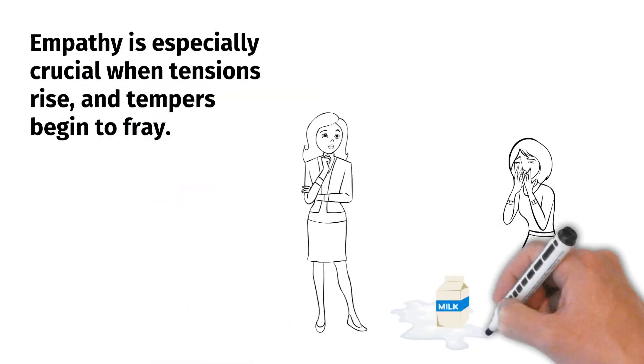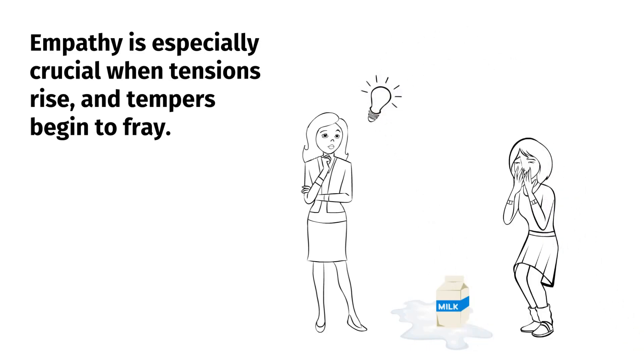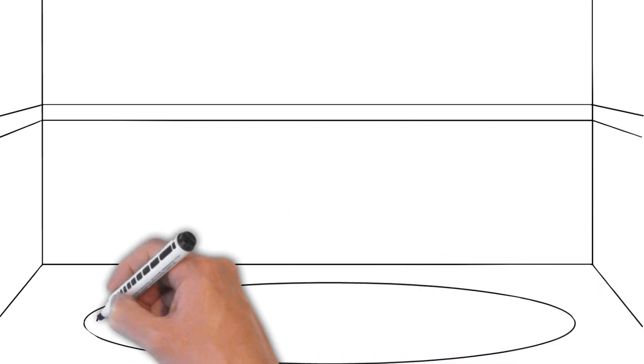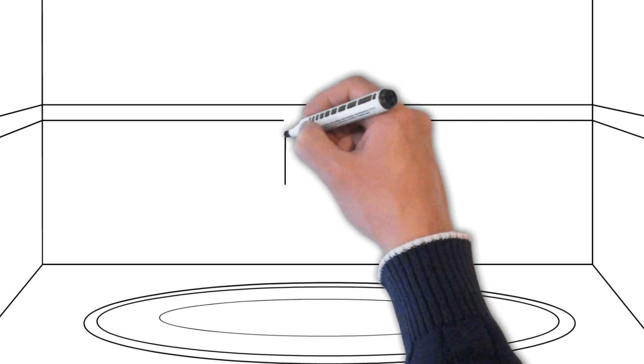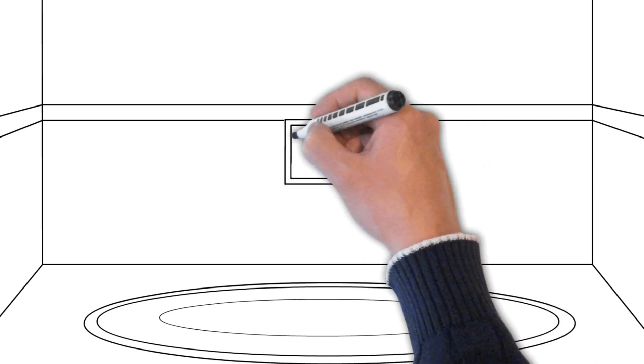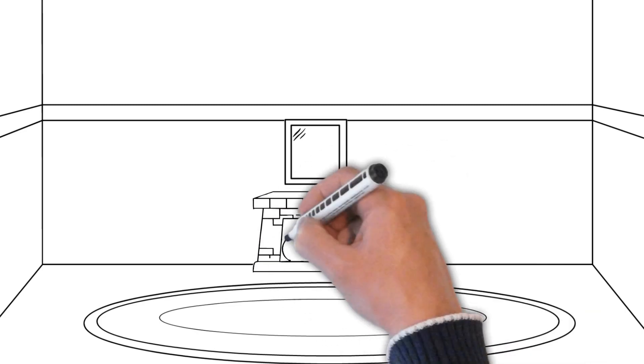Being empathetic and trying to understand other people's viewpoints can help in resolving tricky situations and winning people's trust. Empathy is especially crucial when tensions rise and tempers begin to fray. A simple sympathetic phrase can go a long way in making things right again. When we acknowledge people's perspectives and emotions, it helps build stronger relationships, and people are more likely to open up to us.